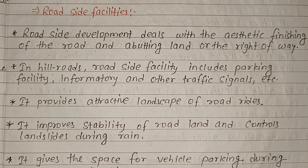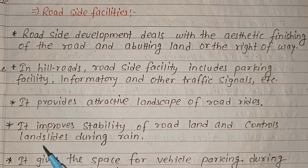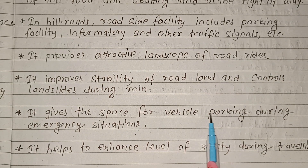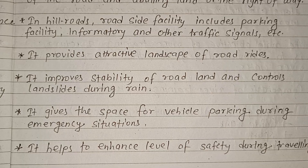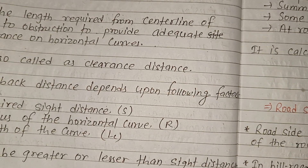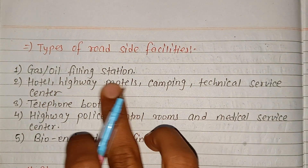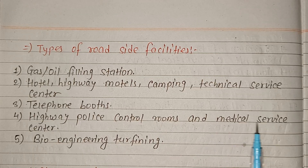Roadside facilities provide an attractive landscape, improve stability of road land, and control landslides during rain. They give space for vehicle parking during emergencies, and help enhance the level of safety during traveling. Facilities include gas and oil filling stations, hotels, highway motels, camping areas, technical service centers, telephone booths, highway police control rooms, and medical service centers.